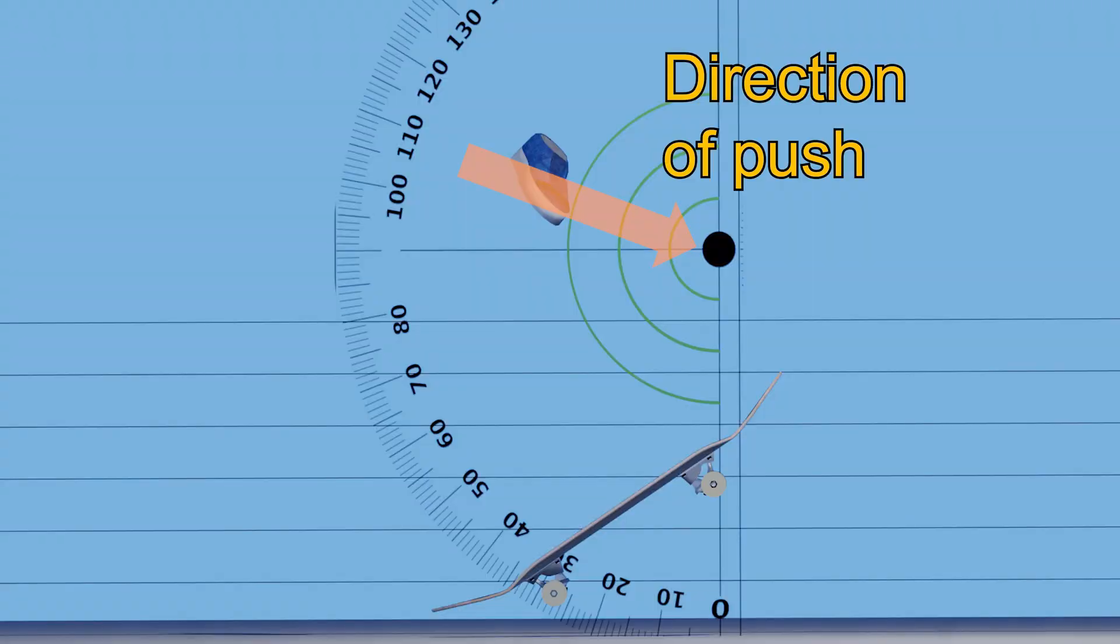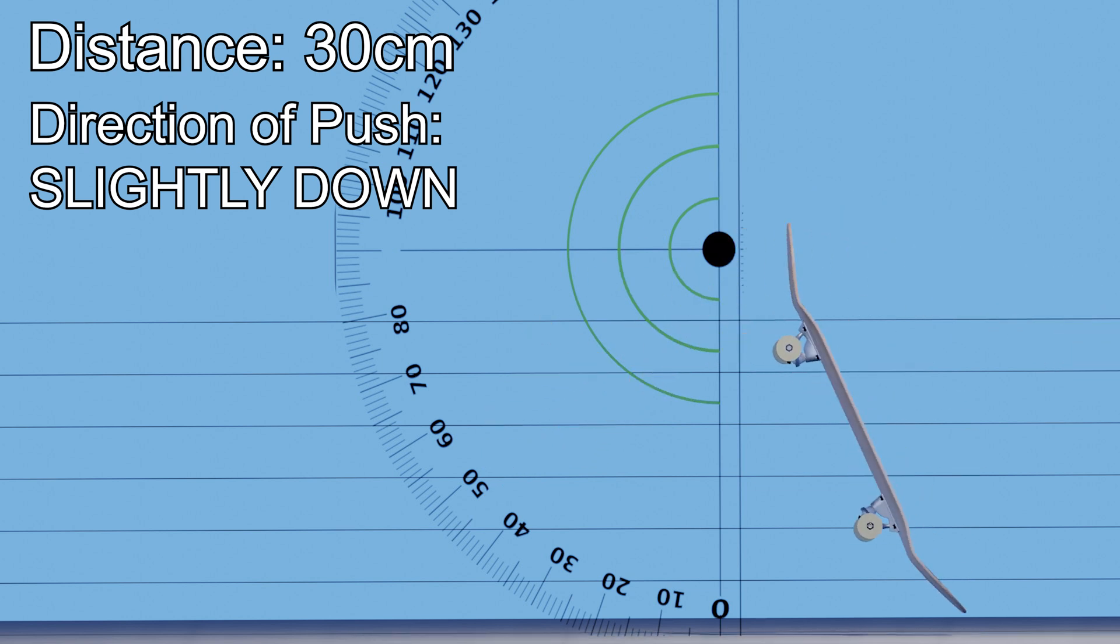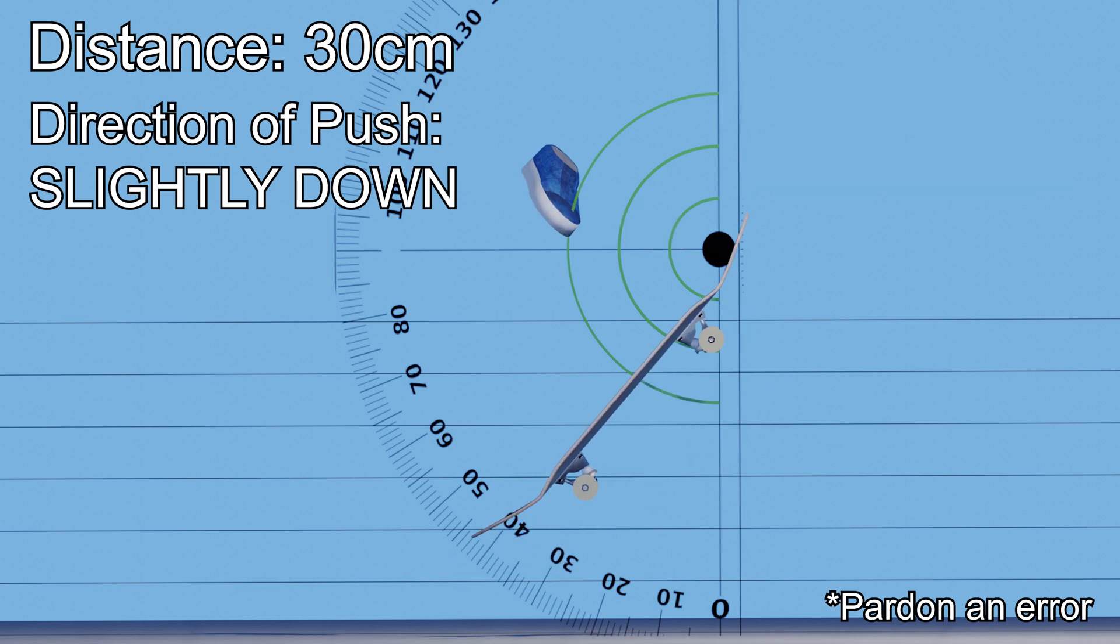Let's push the nose from around 110 degrees. In this case, it seems you can effectively suppress the rising speed of the nose. At the same time, the board's center of gravity lifts the tail without being offset by the front foot.